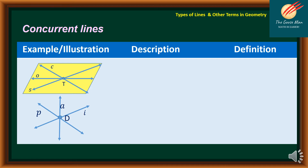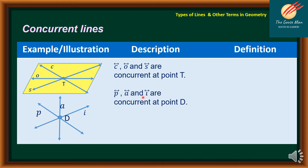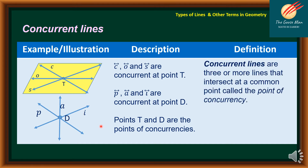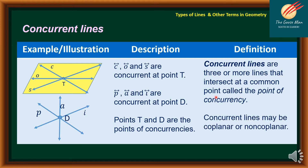We have concurrent lines. Observe the illustration on the left side. Lines C, O, and S are concurrent at point T because they meet at that point and are lying on the same plane. Lines P, A, and I are concurrent at point D. Points T and D are points of concurrency. Concurrent lines are three or more lines that intersect at a common point called the point of concurrency. Concurrent lines may be coplanar, as in the first example, or non-coplanar, as in the second example.